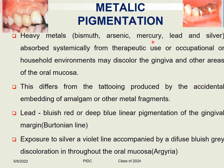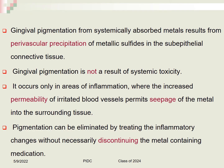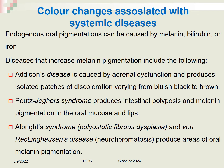Lead can create a bluish-red or deep blue linear pigmentation of the gingival margin known as the Burtonian line. Exposure to silver produces a violet line with diffuse gray-bluish-green discoloration throughout the oral mucosa known as argyria. Gingival pigmentation from systemically absorbed metals results from perivascular precipitation of metallic sulfides in the sub-epithelial connective tissue, and occurs only in areas of inflammation where increased vascular permeability permits seepage of metal into surrounding tissues.